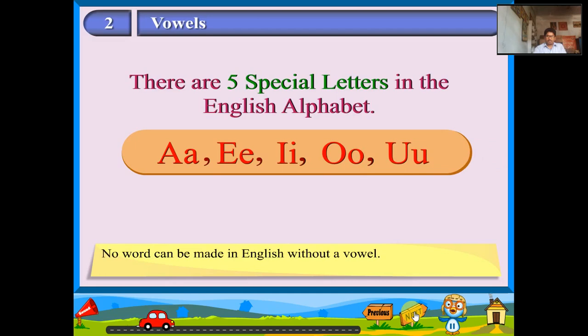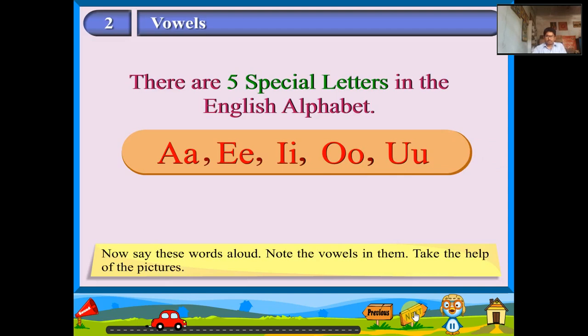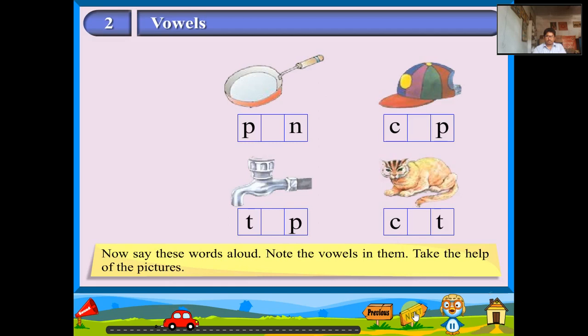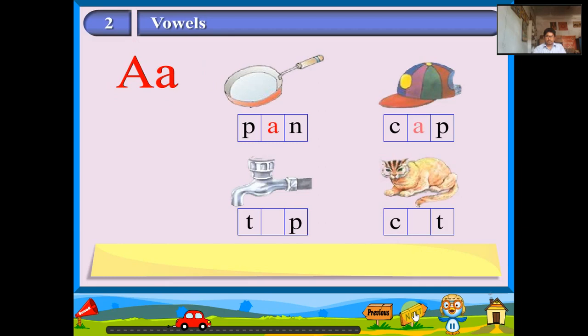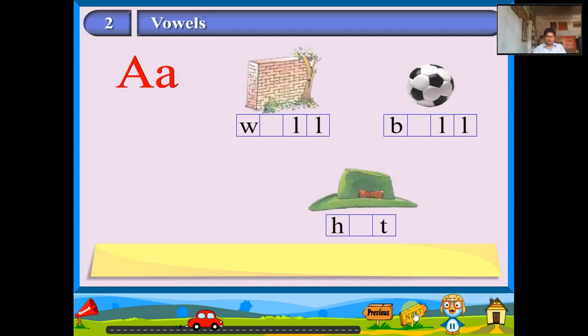Now say these words aloud. Note the vowels in them. Take the help of the pictures. A: Pan, Cap, Tap, Cat, Wall, Ball, Hat.